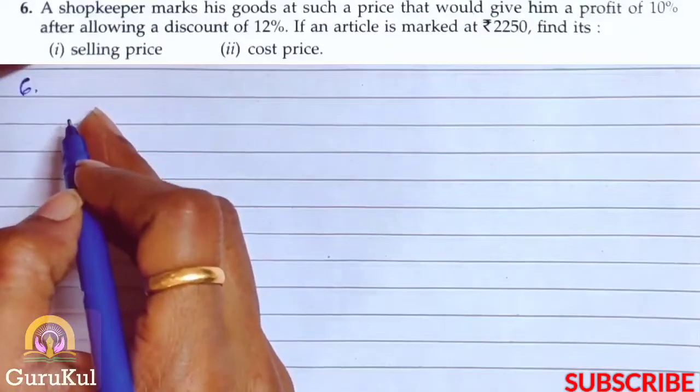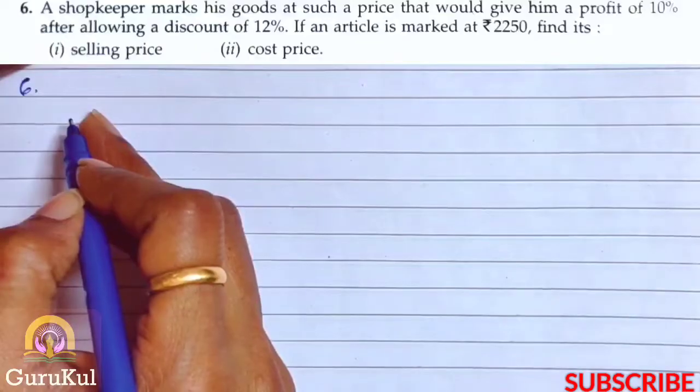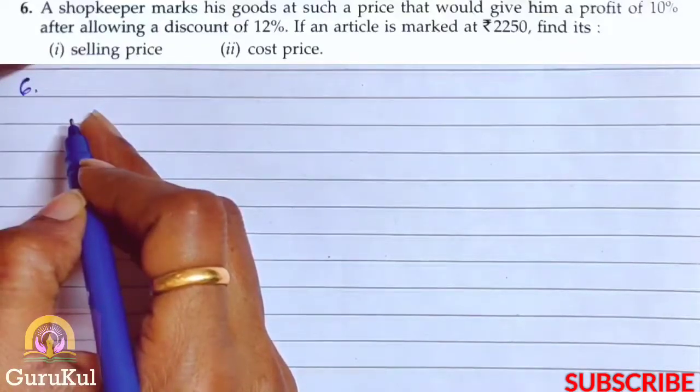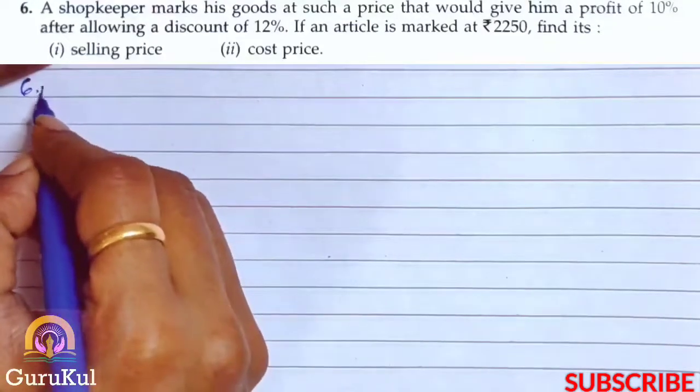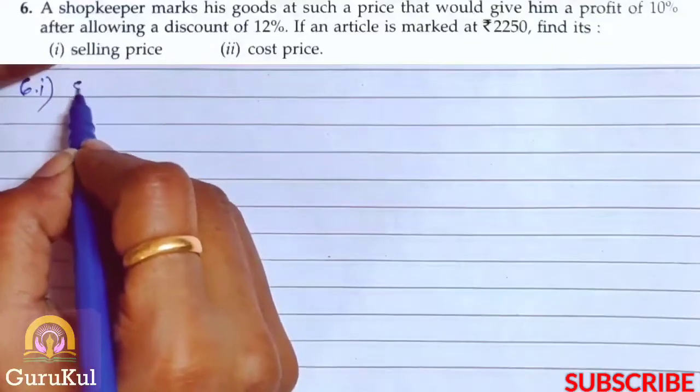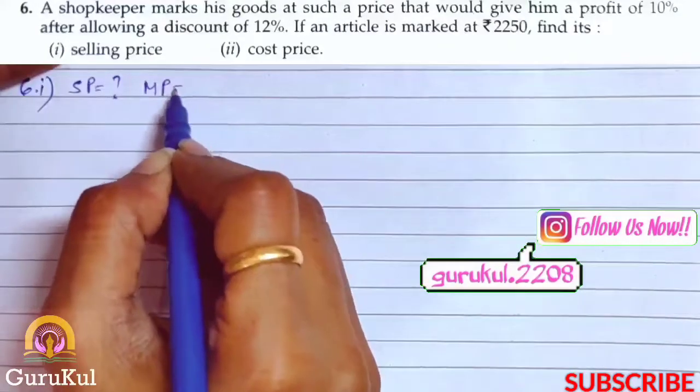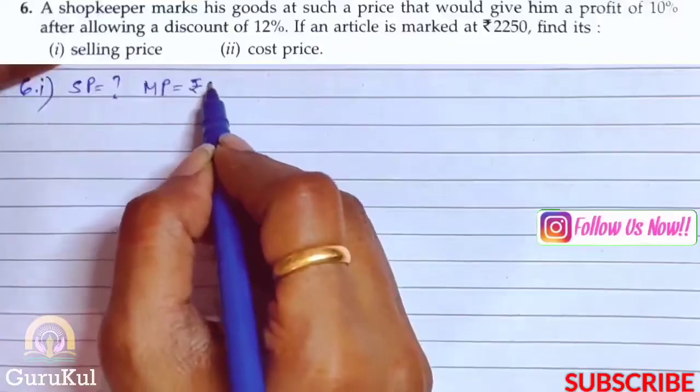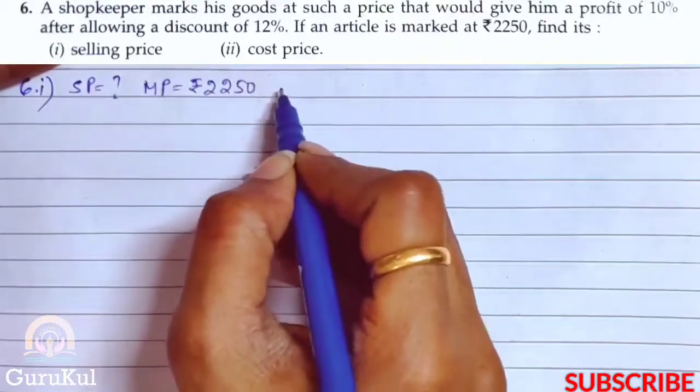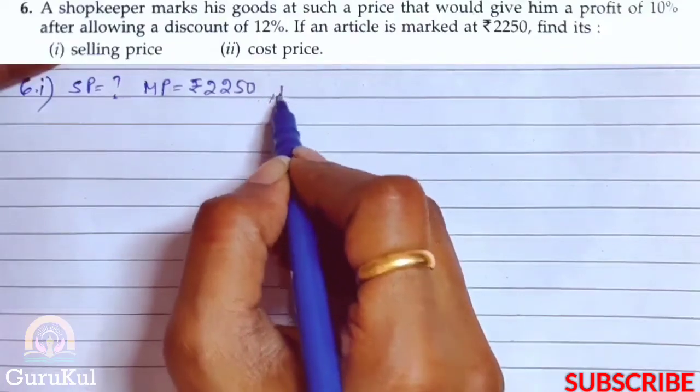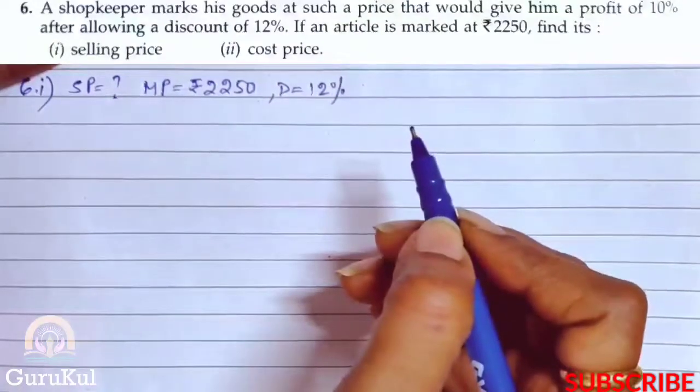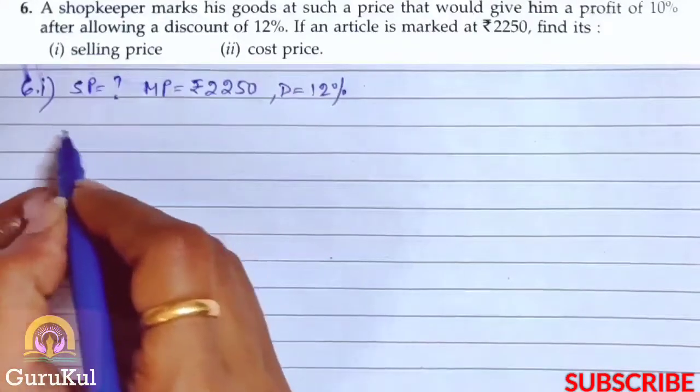Question number 6. A shopkeeper marks his goods at such a price that it would give him a profit of 10% after allowing a discount of 12%. If an article is marked at rupees 2250, we need to find its selling price and then the cost price. So first part, we need to find the selling price where mark price is rupees 2250 and discount is 12%.